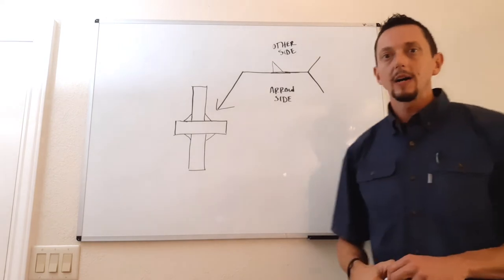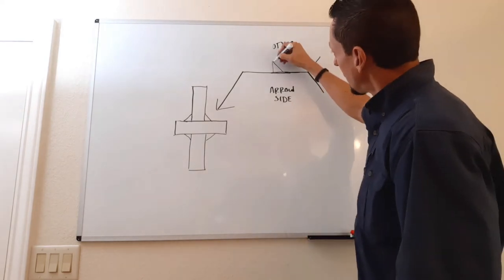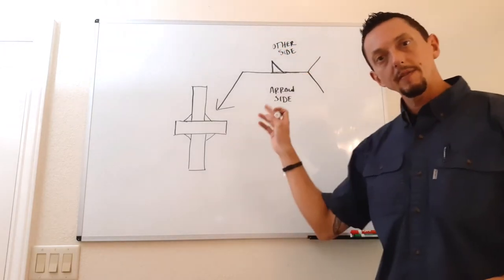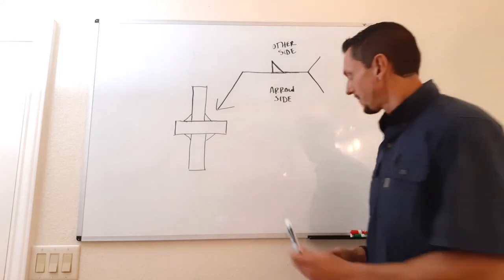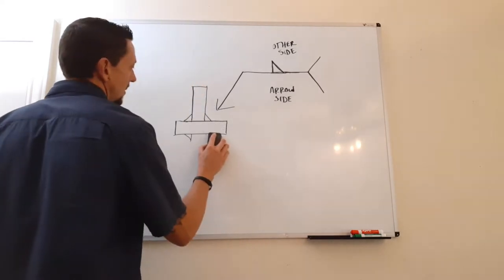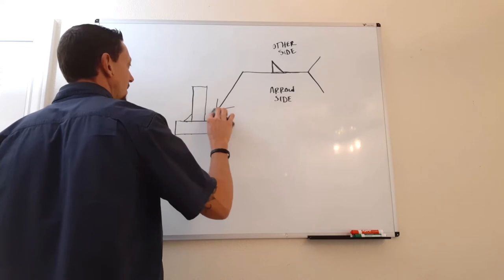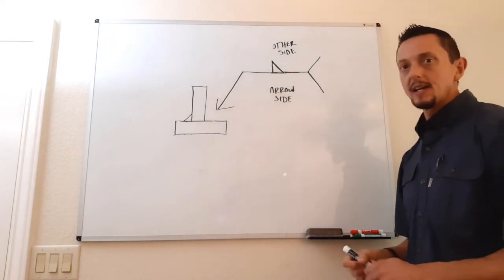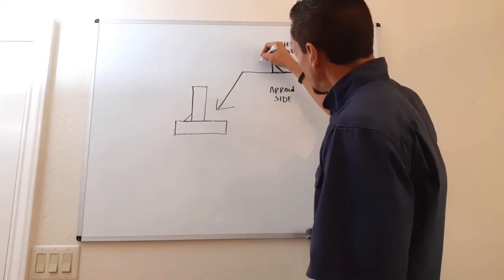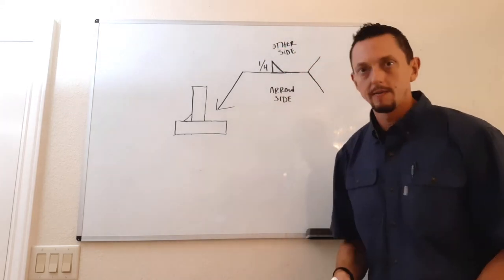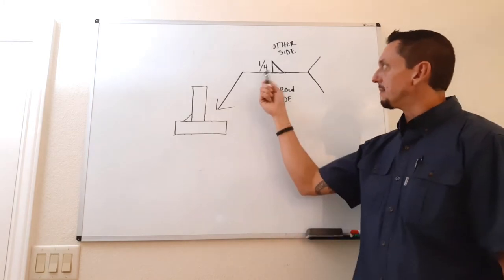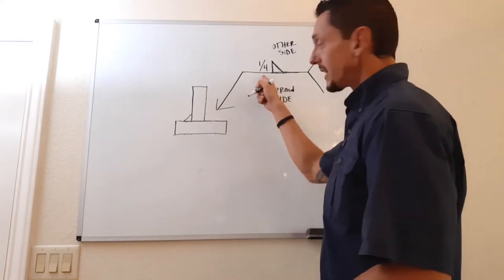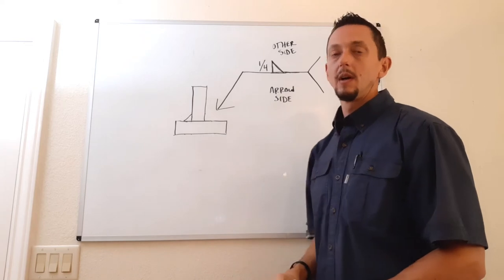Now let's talk about the different locations on the welding symbol and what they mean. We still have an other side side significance. If there is a number to the left of the welding symbol — in this case one quarter — that always has to do with the size of the weld. To the left of the weld symbol always refers to size.